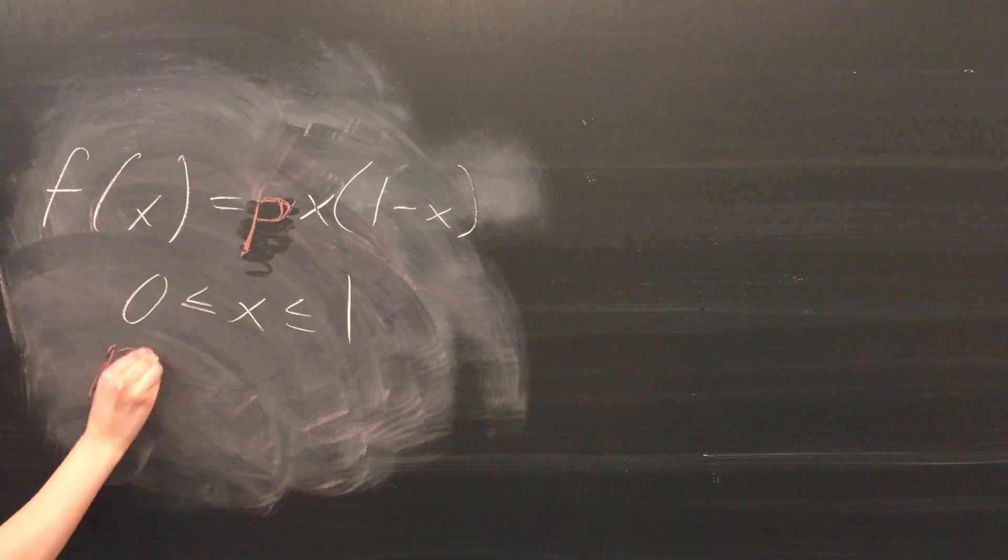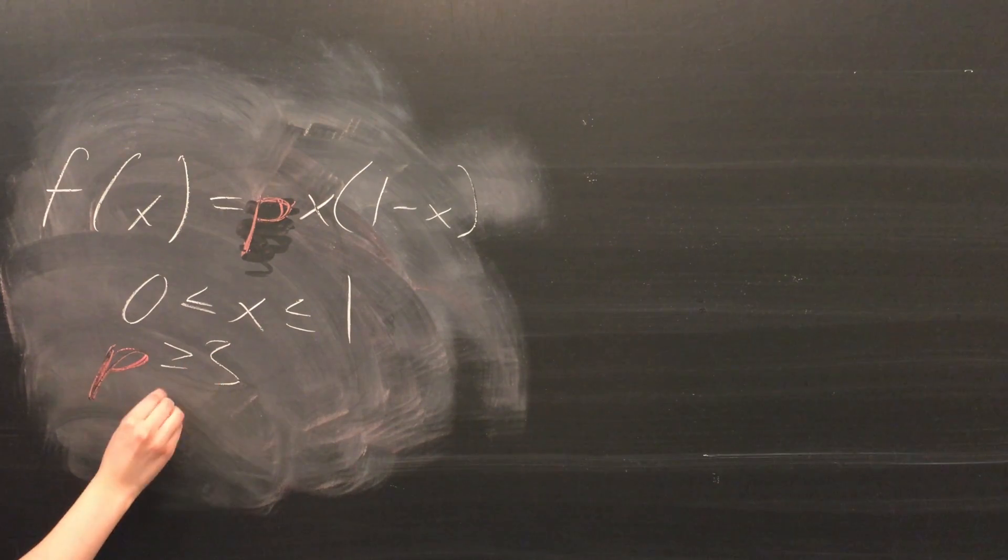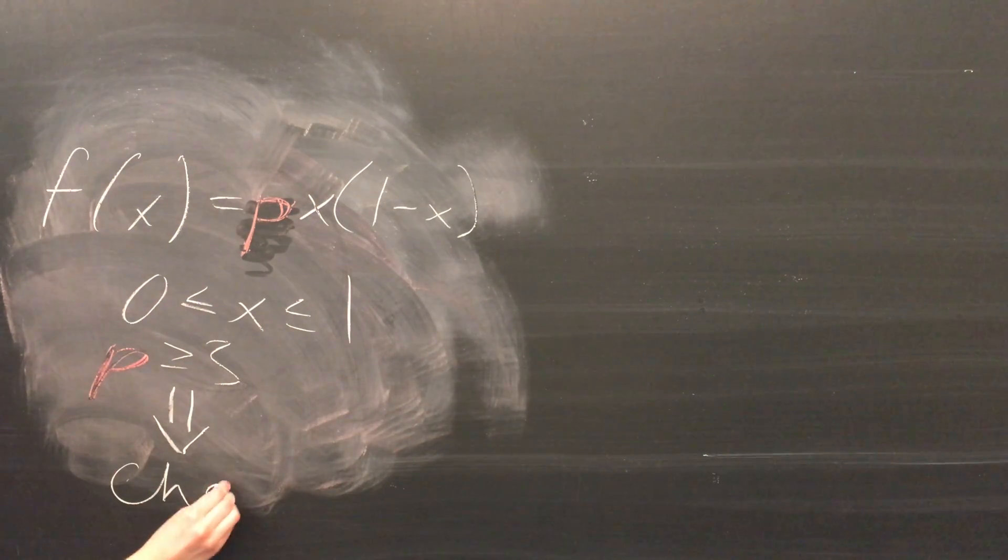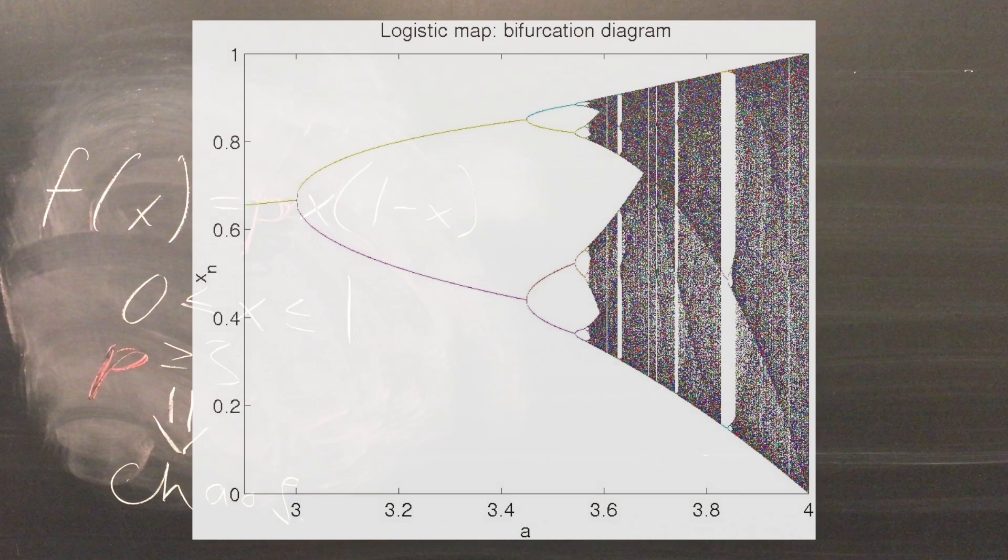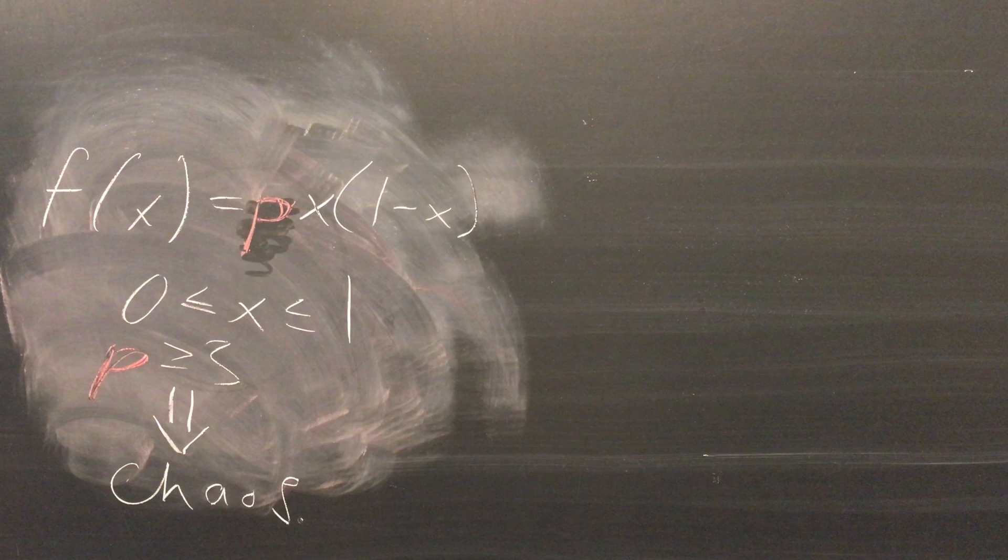For p-values greater than or equal to 3, bifurcations occur in the system. You may be familiar with something looking like this, which is a plot as p varies from 1 to 4 on the x-axis. You can see it branching off into subsimilar branches, forming a fractal structure. We'll talk about fractals in the next video.